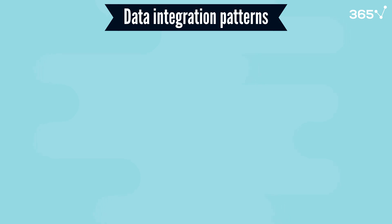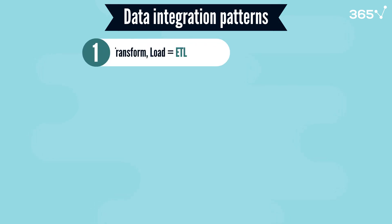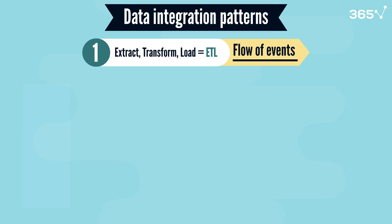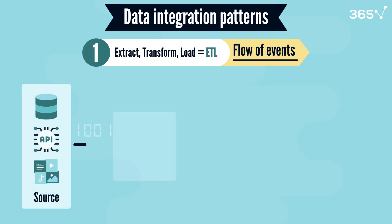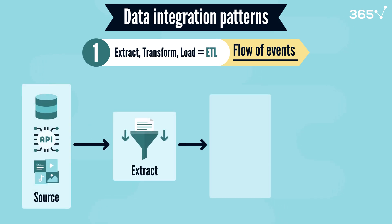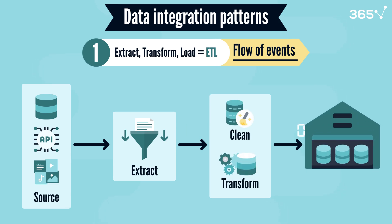The first and most common pattern is called Extract, Transform, Load — often referred to as ETL. The flow of events here is sequential: you first extract the data from its source, clean it up, transform it, and load it into the target system.